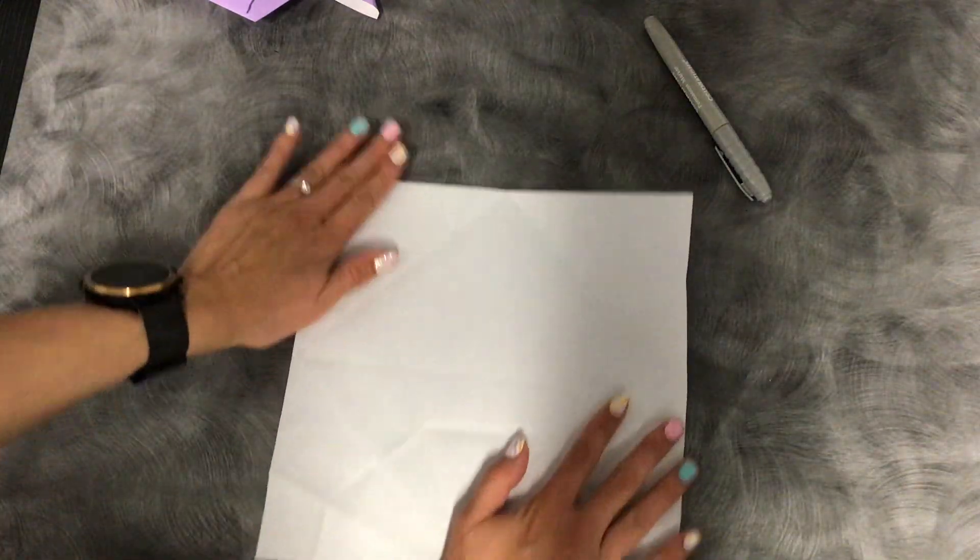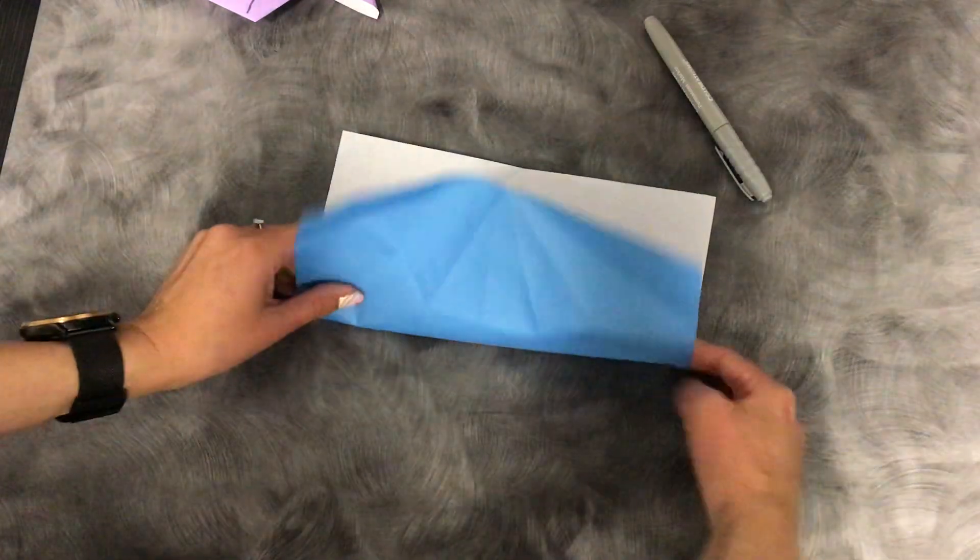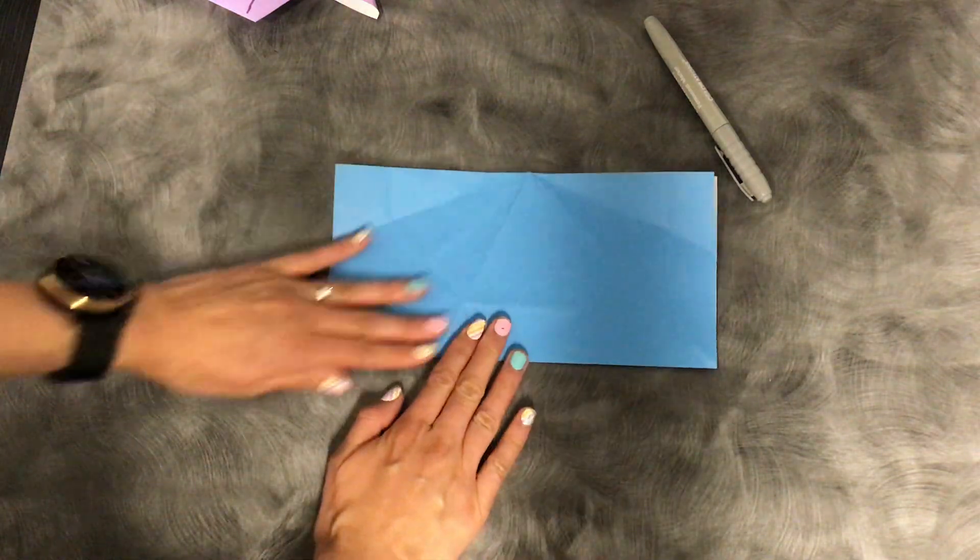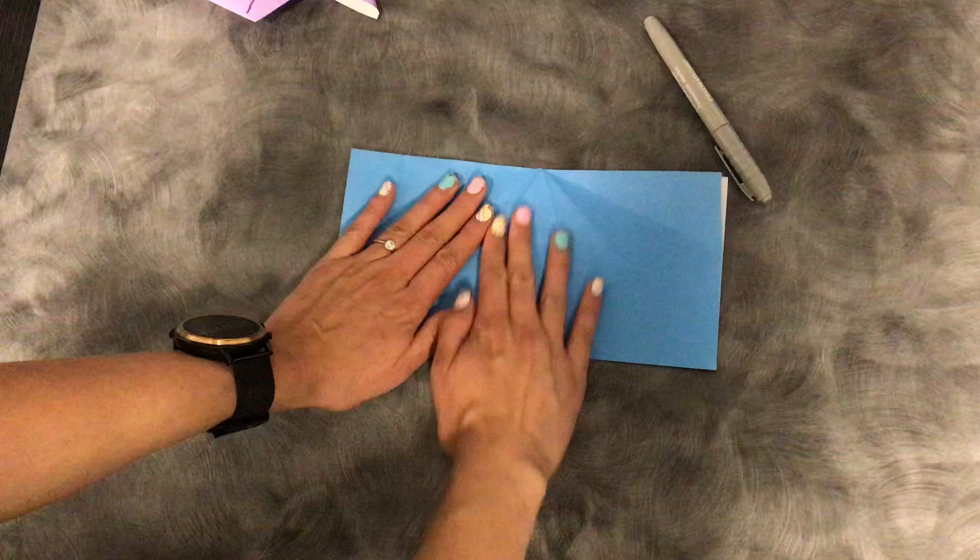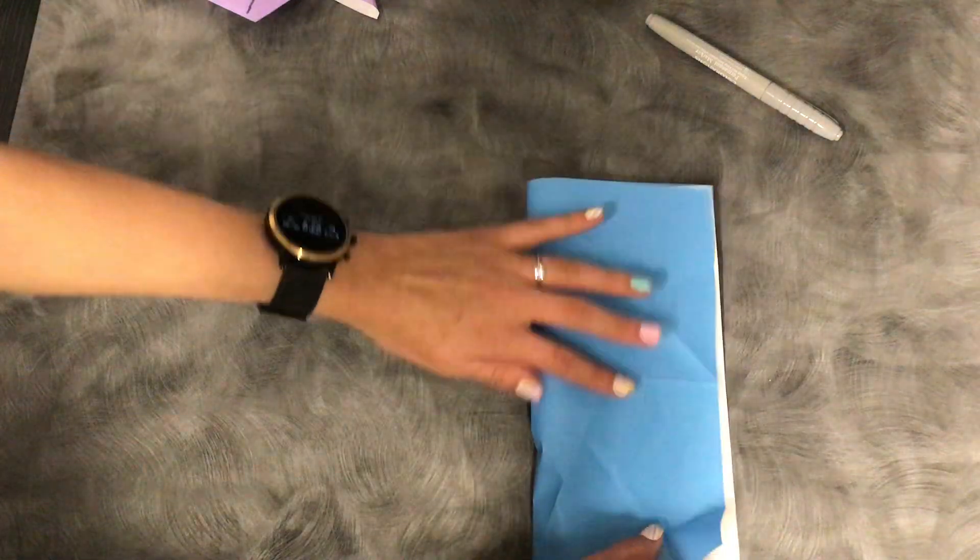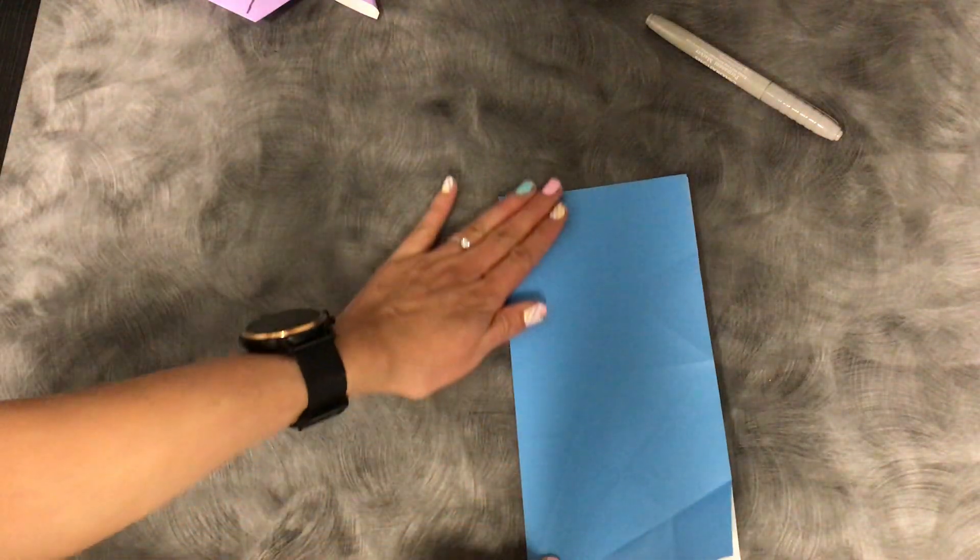So as always you're going to need your square sheet of paper and we're going to make ours with the typical rectangle fold that we always start off with for the most part. So fold it in half one way, unfold, and then we'll fold it the other way.